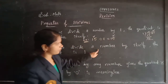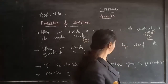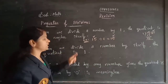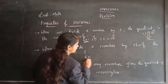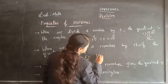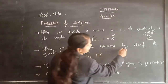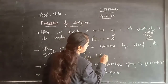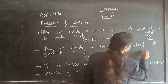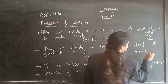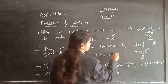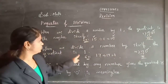Second point: when we divide a number by itself, the quotient is 1. For example, 17 divided by 17: 17×1 = 17. So 1 I am getting as a quotient. When dividing any number by itself, the quotient is 1.